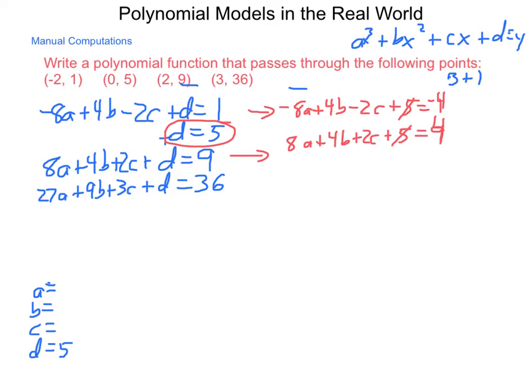Now, because my coefficients have opposite values, I'm simply going to add these two equations together, and I'm going to come out with 0as, 8b's, 0c's, equal to 0. Dividing by 8, I find that b equals 0.